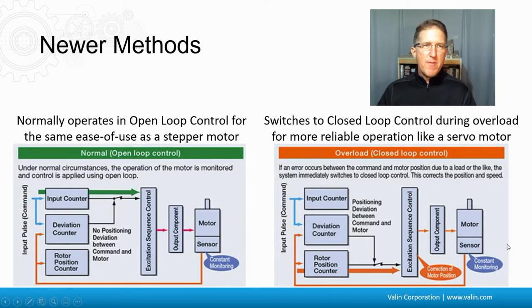There are definitely newer methods for control. This is marketing from one particular manufacturer that has a stepper that they say has a closed-loop stepper. Under normal conditions, it operates in an open-loop control for the same ease of use as a stepper motor. And so this is showing a stepper motor with a sensor on it that has a deviation or position tracking counter in it. But then it switches to a closed-loop control during the overload for a more reliable operation like a servo motor. And so they say here that it's going to be more servo-like when it gets into an overload situation. But notice here it says for more reliable operation like a servo motor. It's not claiming that it is a servo motor, but it has a couple of different modes.